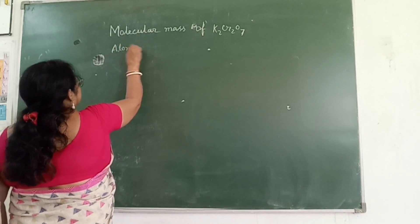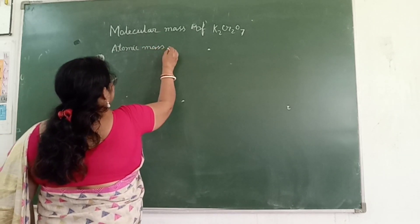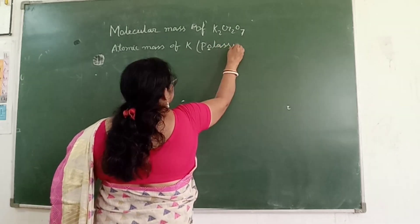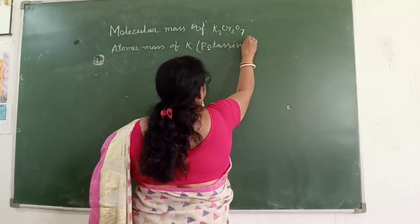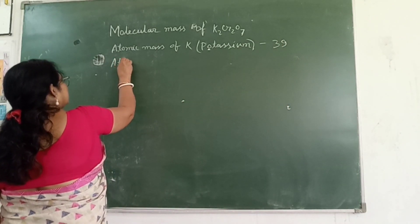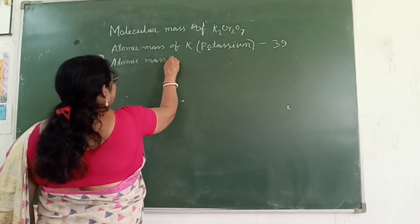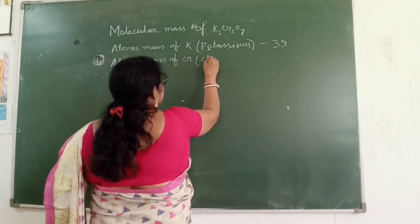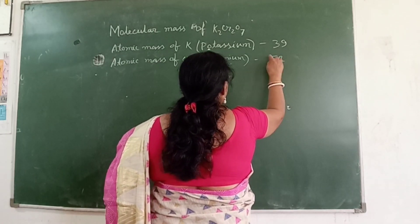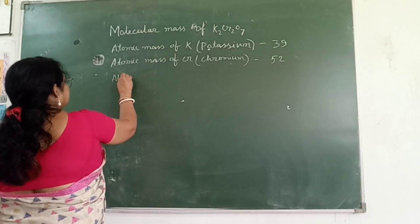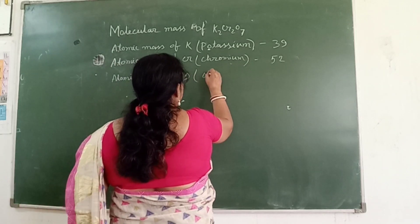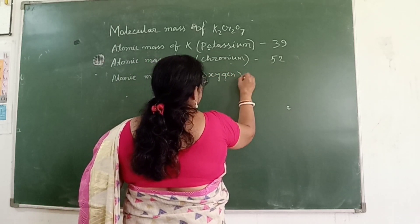Atomic mass of potassium is 39, chromium is 52, and atomic mass of oxygen is 16.